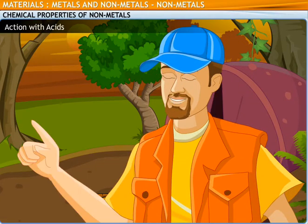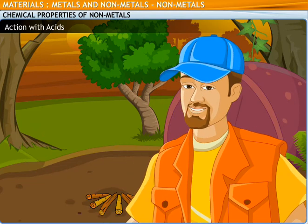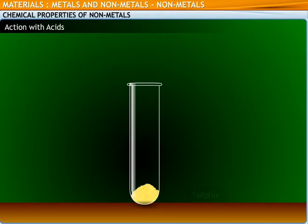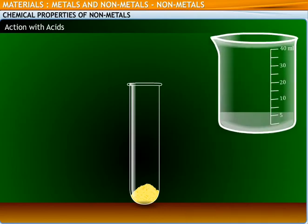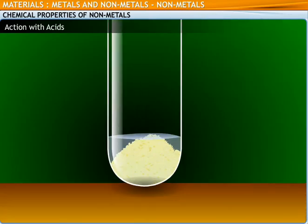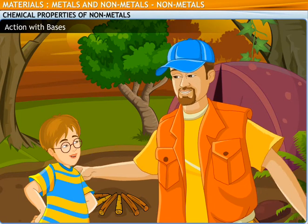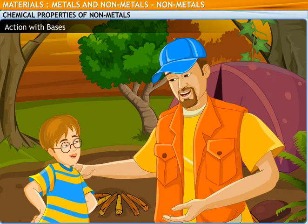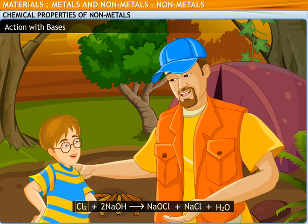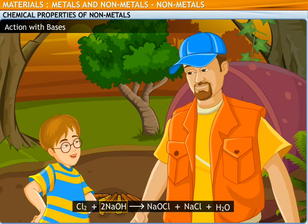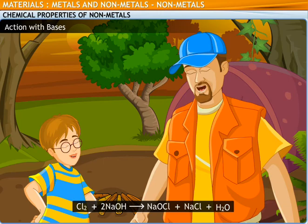Yet another important property of non-metals is that they do not react with acids. Let's look at this small experiment. Take some sulfur powder in a test tube. Add 2 to 3 ml of dilute hydrochloric acid or dilute sulfuric acid. There is no observable change. Unlike acids, bases do react with non-metals. The reaction of non-metals with bases is complex. For example, when chlorine reacts with a base like sodium hydroxide, it gives multiple products like sodium hypochlorite, sodium chloride and water.